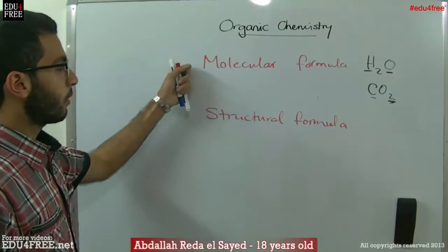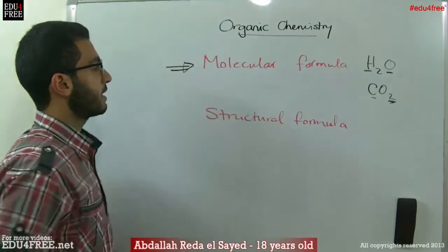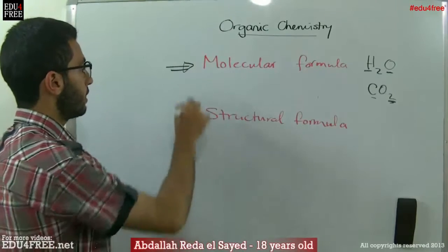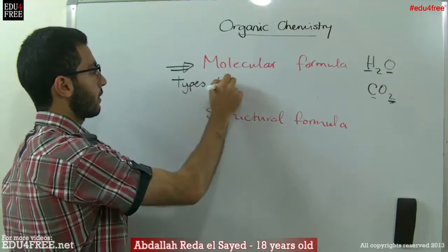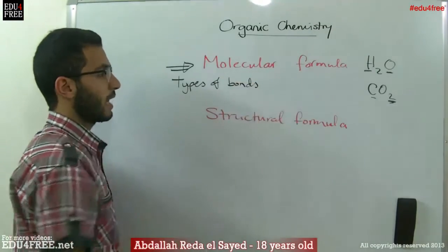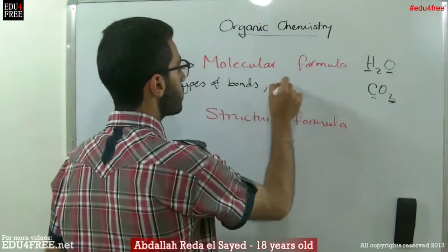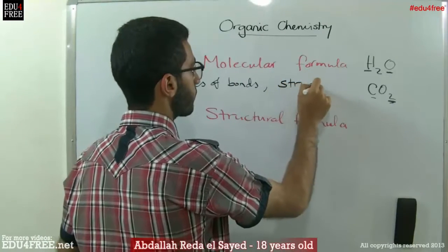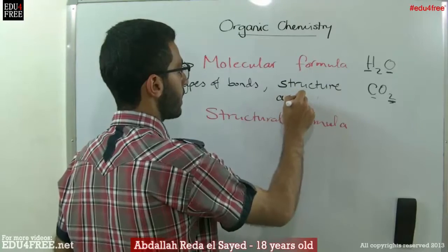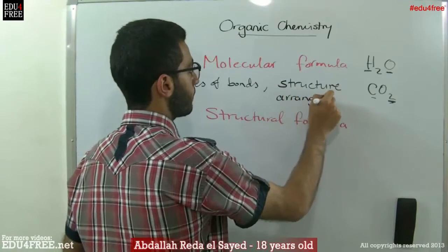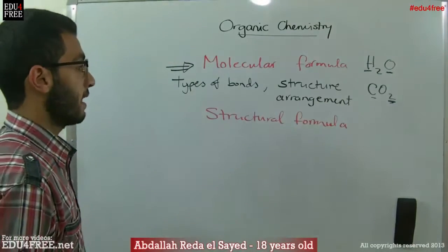But the molecular formula has a very great disadvantage: it doesn't show us the types of bonds between these atoms, and it doesn't show us the structure — or rather the arrangement — of the atoms. Let's look at an example.